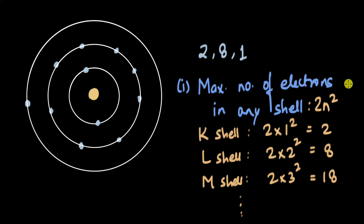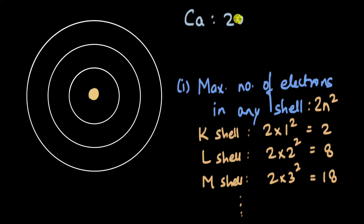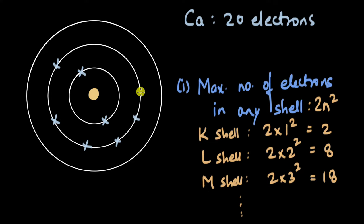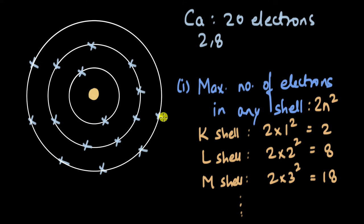A calcium atom has 20 protons and 20 electrons, since every atom is neutral. If we distribute the electrons, we put two in the first shell, eight in the second shell (L), and the remaining 10 in the third shell (M). The M shell can hold a maximum of 18, so we might place 10 electrons there, giving a configuration of 2, 8, 10. But it turns out this is not how electrons are actually distributed in a calcium atom.